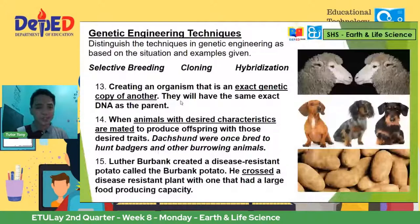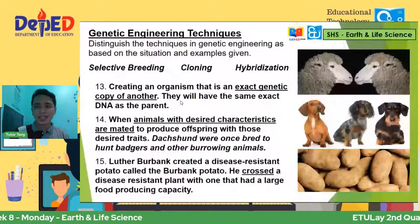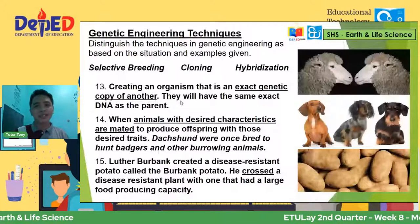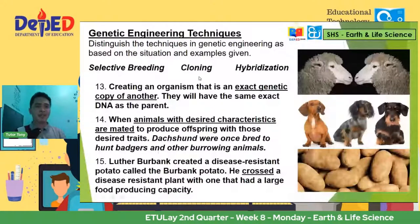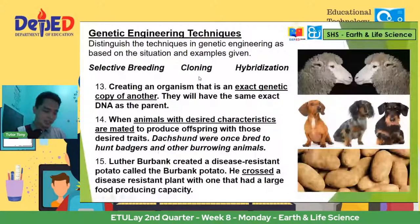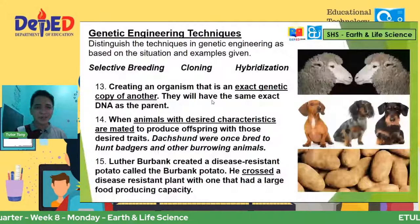Number thirteen: an exact genetic copy of the other. Kilala ba ninyo yung sheep na yan? That's Dolly the sheep and the process is called cloning. So number thirteen is cloning — they will have the same exact DNA as the parent.